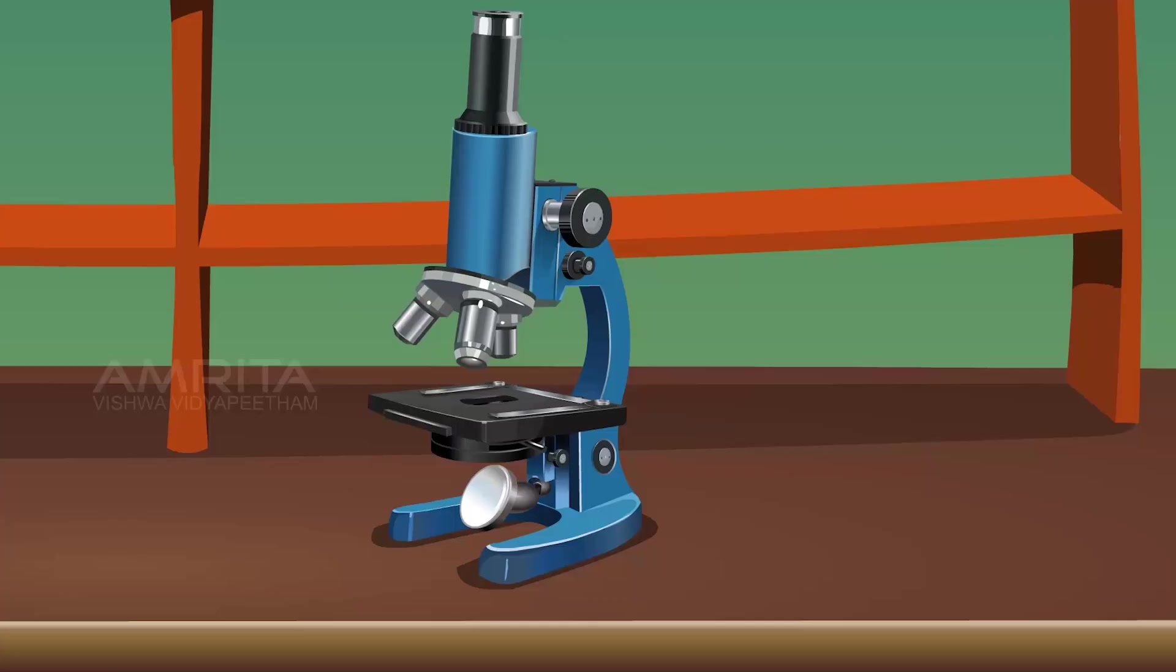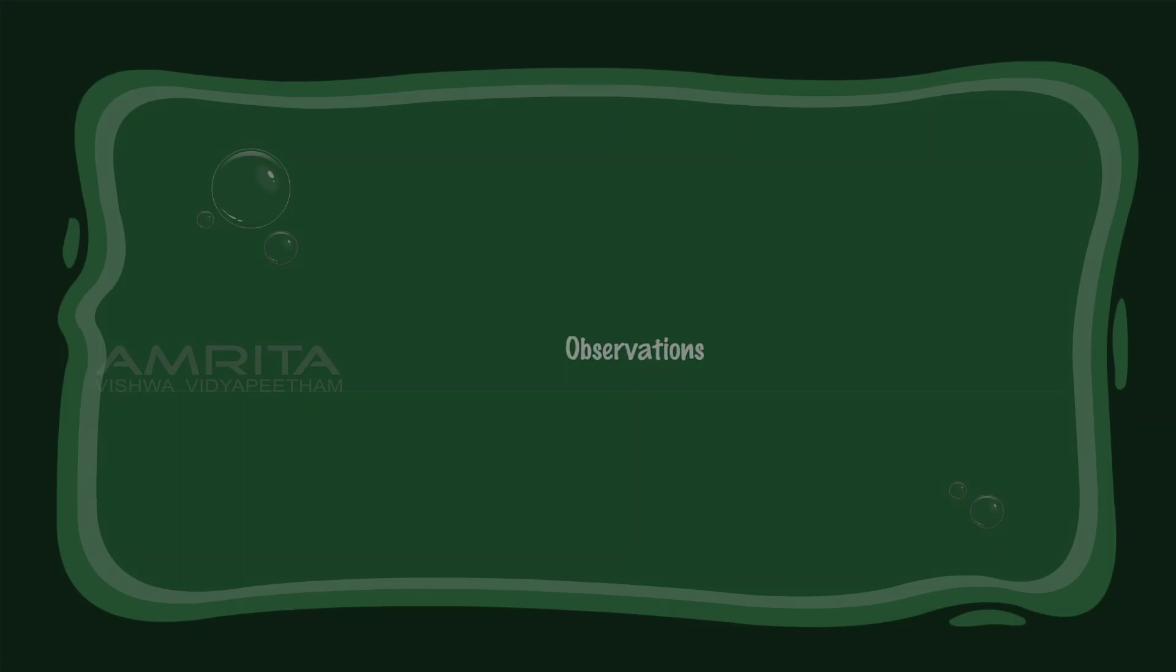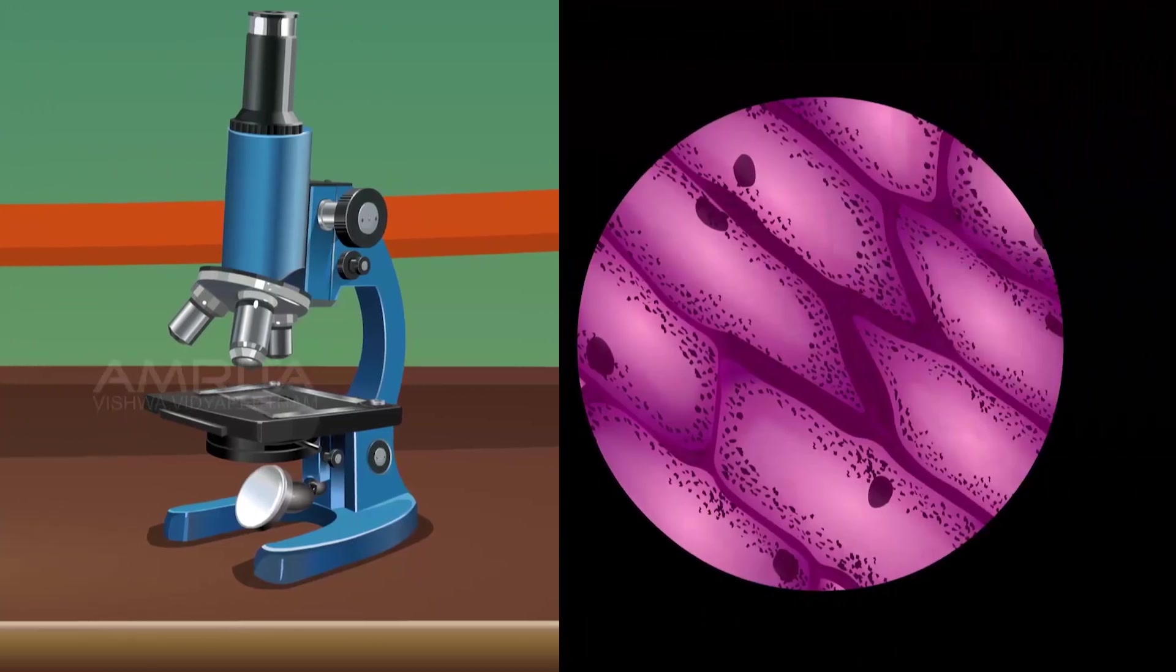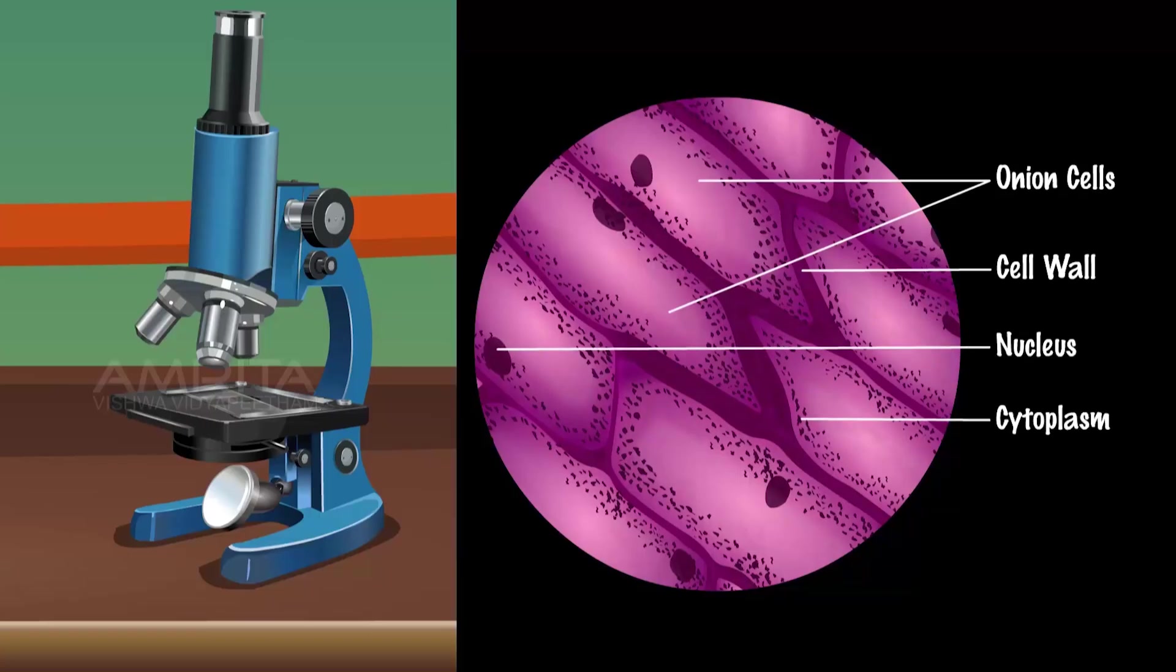View the slide under the compound microscope. Observations: A large number of regularly shaped cells are lying side by side. Each cell has a distinct cell wall. A distinct nucleus is present on the periphery of each cell. Lightly stained cytoplasm is observed in each cell. A large vacuole is present in the centre of each cell surrounded by the cytoplasm.